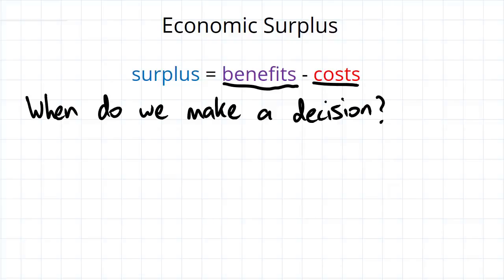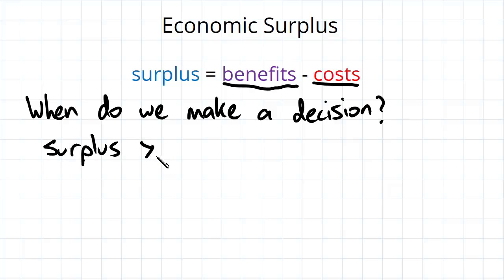Looking at this equation, if the benefits are greater than the costs, then obviously the surplus is going to come out to be positive. So when do we make a decision? We make it when the surplus is greater than or equal to zero.